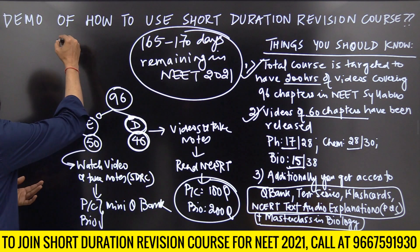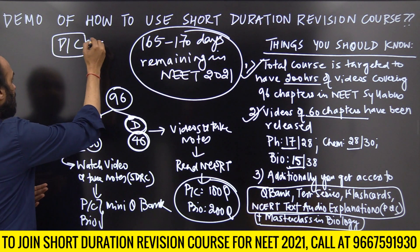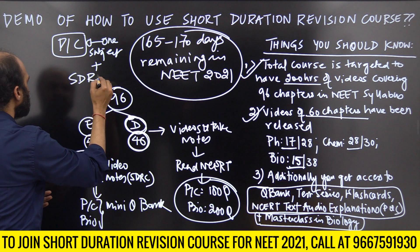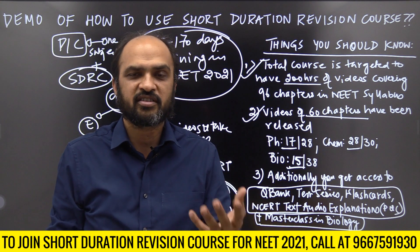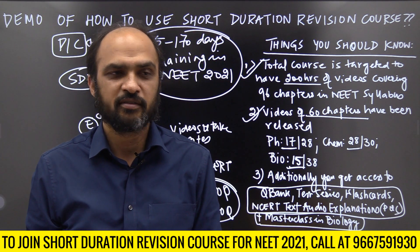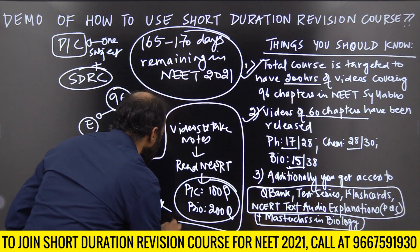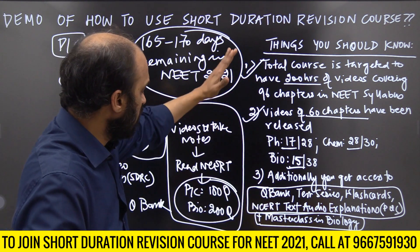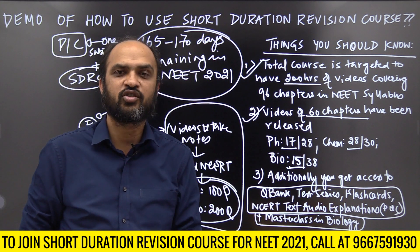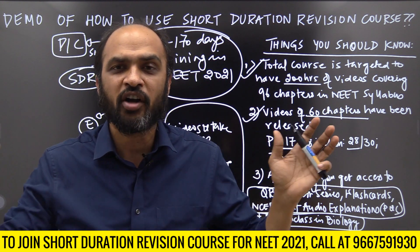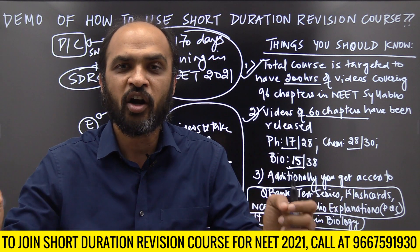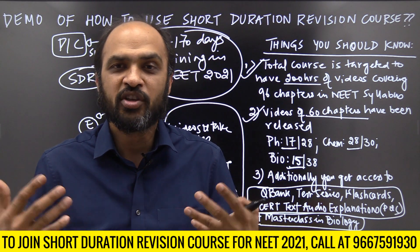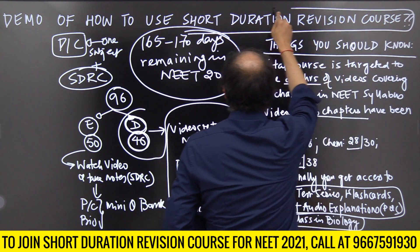A lot of students who struggle with Physics or Chemistry are taking a single subject course and additionally using the short duration revision course. For example, if they've taken a Physics subject course, they go in detail with Physics chapters - treating them as difficult - and for Chemistry and Biology they study from the short duration revision course. That is a good strategy. The whole idea is to make you focus on revision - you cannot remember all the data, formulas, and information from 96 chapters without continuously revising.